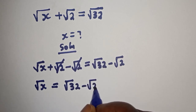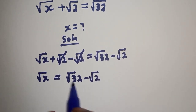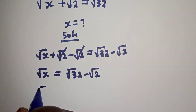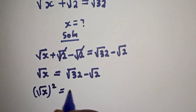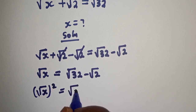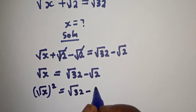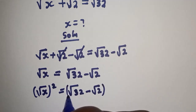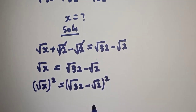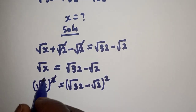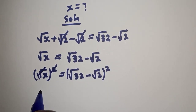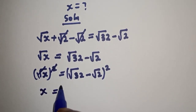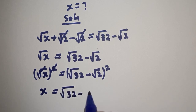Now let's square both sides. Square root of s squared is equal to square root of 32 minus square root of 2, all squared. This cancels, so s is equal to square root of 32 minus square root of 2, all squared.